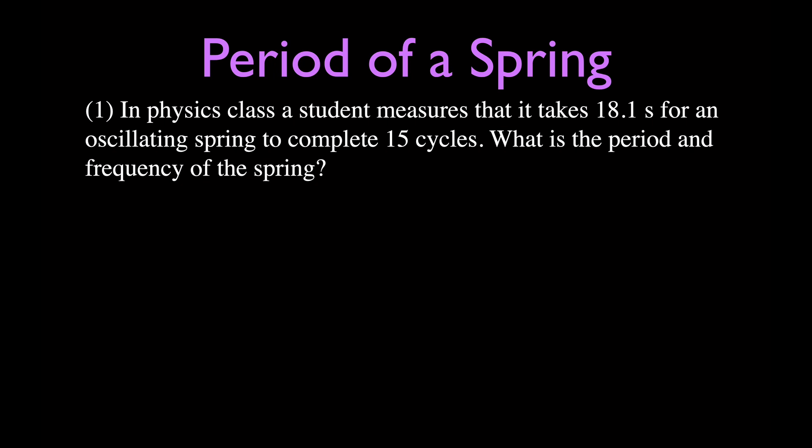This first problem says that in physics class, a student measures that it takes 18.1 seconds for an oscillating spring to complete 15 cycles. We want to know what is the period and what is the frequency. For this problem, we're going to go over what is the definition of the period and the frequency, because we're going to use those equations to solve this problem.